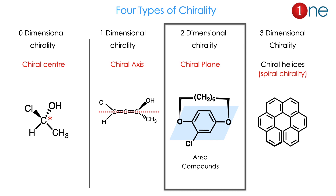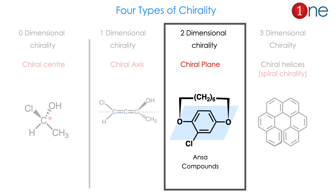Chirality is classified into four types based on dimension. Zero-dimensional means a chiral center — a carbon attached with four different atoms. One-dimensional chirality comes from a chiral axis, mostly allenes and spiro rings. Two-dimensional chirality comes from a chiral plane — ansa compounds and cyclophanes fall in this category. Three-dimensional chirality, or helical chirality, comes from helices, DNA, RNA. The focus of this video is two-dimensional chirality and finding R and S configuration of ansa compounds.